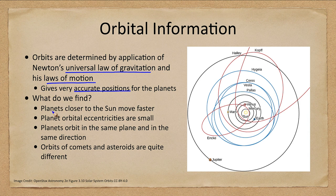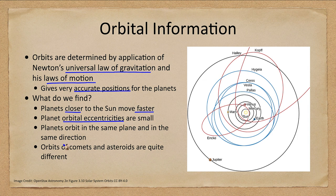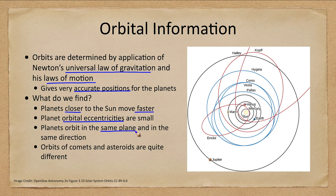We find that planets closer to the sun move faster, and we saw this in Kepler's third law. We see that the orbital eccentricities for planets are small. None of the planets have highly eccentric orbits. We note that all planets orbit in the same plane and the same direction.